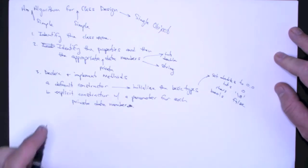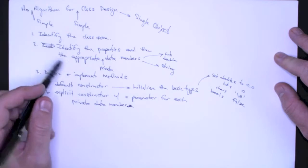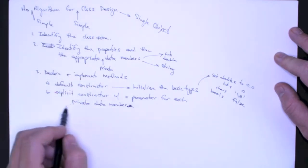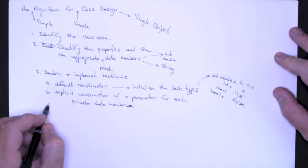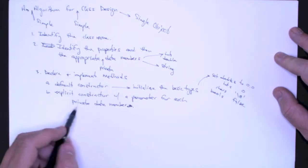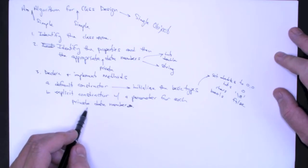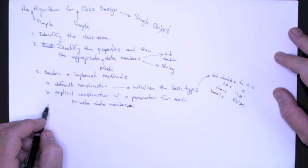So with a parameter for each private data member. For each private data member. Now, again, not knowing anything about the class, if you told me a class, maybe I would change this, but I think this is a reasonable assumption. So if you have a time object, an employee object, you're going to want to give a programmer the opportunity to pass in values for each of those private data members.